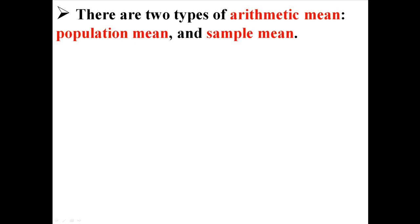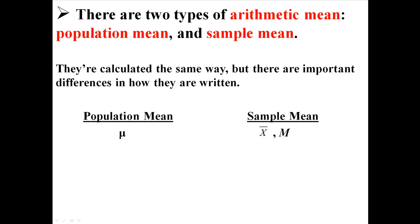There are actually two types of arithmetic mean: the population mean and the sample mean. They're calculated exactly the same way but there are important differences in how they are written. The population mean is the Greek letter mu, which is a little u looking thing.